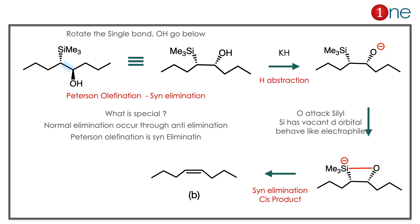Whenever you have a silyl system with an alcohol, think of Peterson elimination. Peterson elimination is a syn elimination, so we have to redraw the molecule. If you redraw it with OH below, it is the same molecule — just a single bond rotation. Then proton abstraction occurs and an anion is formed. The anion attacks silicon; this is possible because silicon has vacant d-orbitals and behaves like an electrophile. A new silicon-oxygen bond is formed, and then syn elimination occurs. Since the elimination is syn, the product is the cis alkene — so the answer is clearly B. Two important things: Peterson elimination is a syn process, so you imagine the molecule in the syn arrangement and rotate bonds to get the syn conformation. Second, the product alkene in Peterson elimination is always the syn product.